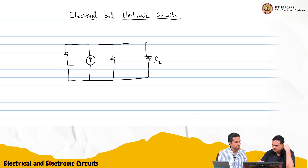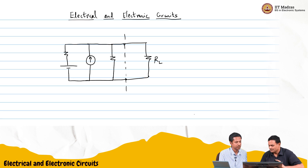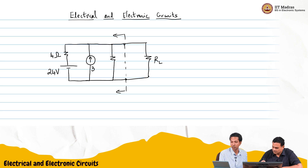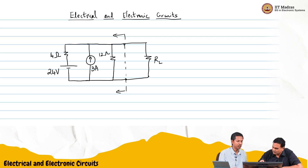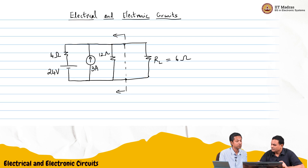The voltage is 24 volts. What you are saying is this is the load — this is the rest of the network. For Thevenin we always want to identify two nodes. The voltage is 24 volts, the 4 ohm resistor, current is 3 amperes, the other resistor is 12 ohms. RL may be 6 ohms for now, though actually RL can be anything, because the Thevenin equivalent is valid for the rest of the network.